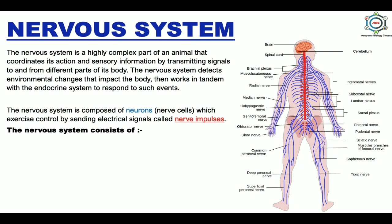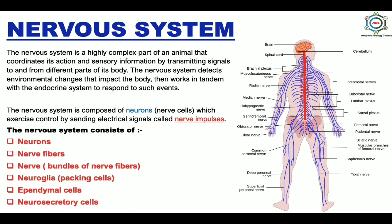The nervous system consists of neurons, nerve fibers, nerves, neuroglia, ependymal cells, and neurosecretory cells.